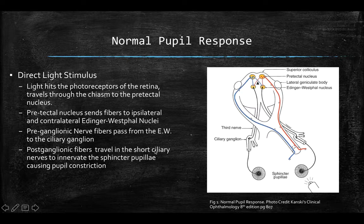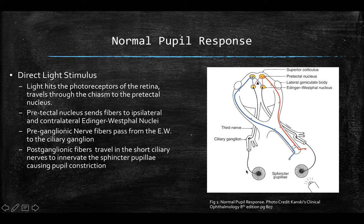This is critical to the normal intact consensual response. When you shine light into the left eye, as you'd notice, the right eye constricts as well. The pathway is completed as fibers from those Edinger-Westphal nuclei travel to the ciliary ganglion where they synapse and then become the short ciliary nerves, which innervate the sphincter pupillae to cause pupillary constriction. All of this has to be intact in order to have an appropriate consensual response.